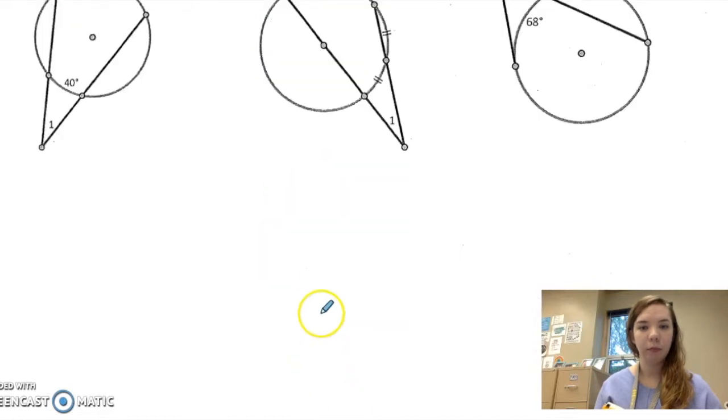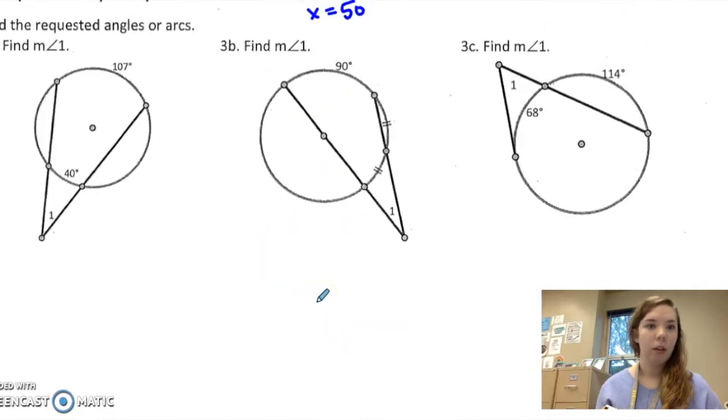Find angle 1, so I would take 107 minus 40 divided by 2 is 33.5 degrees. Here,